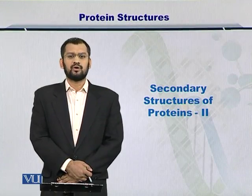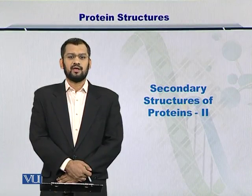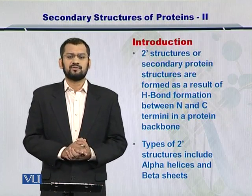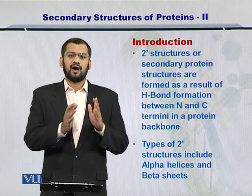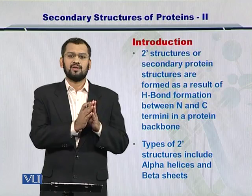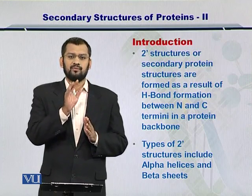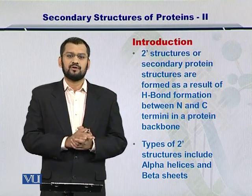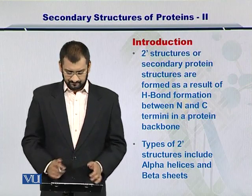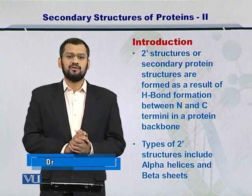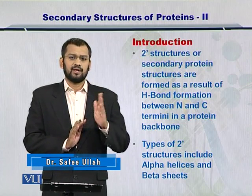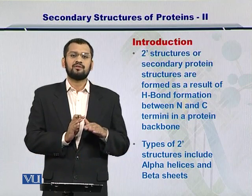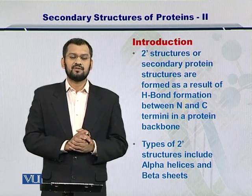Dear students, in this module we are going to continue to explore the secondary structures in proteins. The secondary structures in proteins are formed as a result of hydrogen bonding between the N and C termini of different amino acids which are present in the backbone of the proteins. As a result, complex substructures are formed which we call the secondary structures. Examples include the alpha helices, the beta sheets, and in this module we are going to look at some other types of these secondary structures as well.